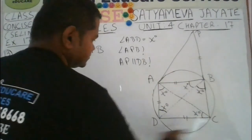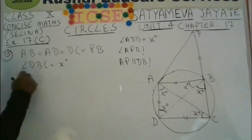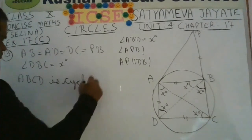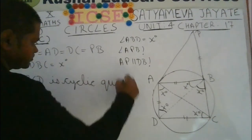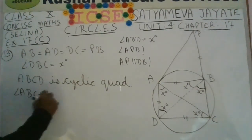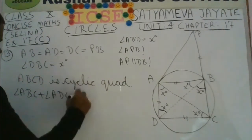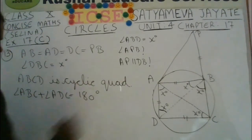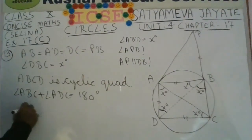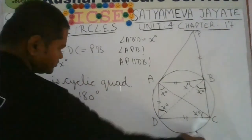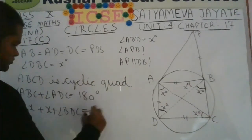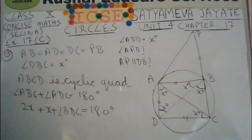Now make use of the cyclic property: quadrilateral ABCD is cyclic, so the sum of opposite angles is 180 degrees. Therefore angle ABC plus angle ADC equals 180 degrees. Angle ABC is x plus x, that is 2x. Angle ADC equals x plus angle BDC. From here you can calculate angle BDC — it will be 180 minus 3x.